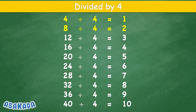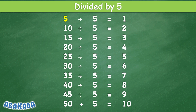Divided by 4: 4 divided by 4 equal 1, 8 divided by 4 equal 2, 12 divided by 4 equal 3, 16 divided by 4 equal 4, 20 divided by 4 equal 5, 24 divided by 4 equal 6, 28 divided by 4 equal 7, 32 divided by 4 equal 8, 36 divided by 4 equal 9, 40 divided by 4 equal 10.